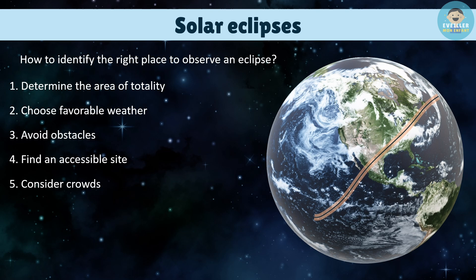Consider crowds: if you want to view the eclipse in a popular location, prepare for crowds and arrive early to find a spot. Consider light pollution: light pollution can affect the visibility of stars and planets during the eclipse, so choose a location with a dark night sky if you want to observe these phenomena.